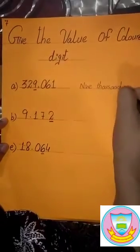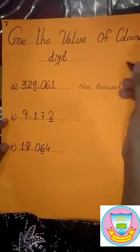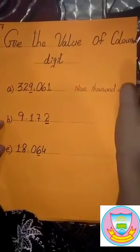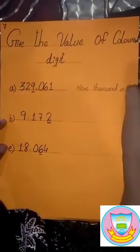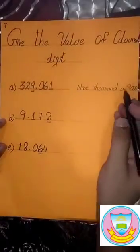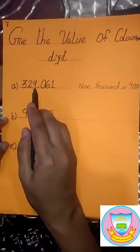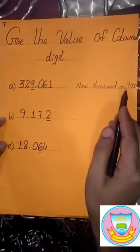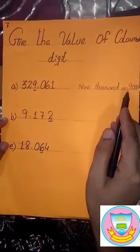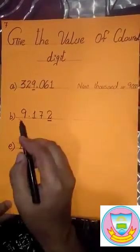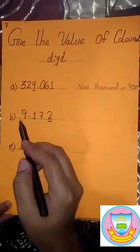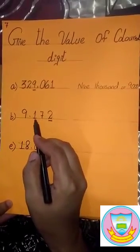So in this question, the value of nine is nine thousand. We write it as nine thousand, or we write it in digits also: 9,000. The value of nine is nine thousand.